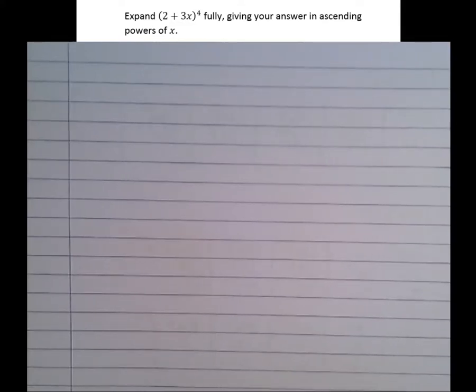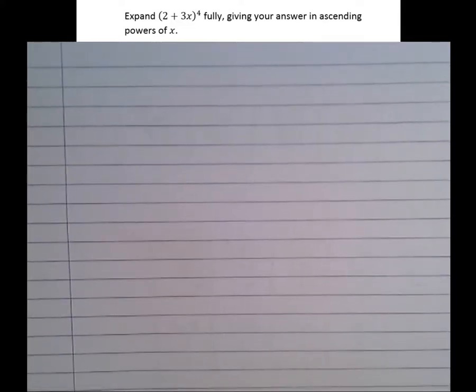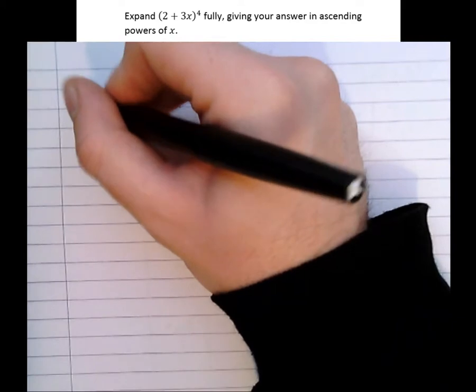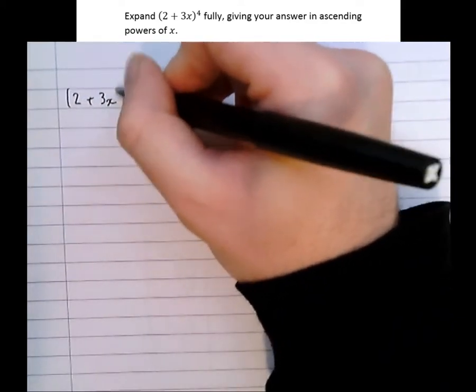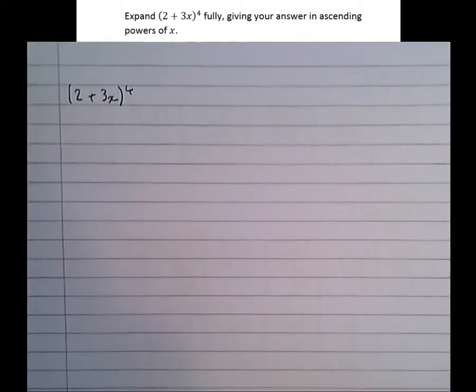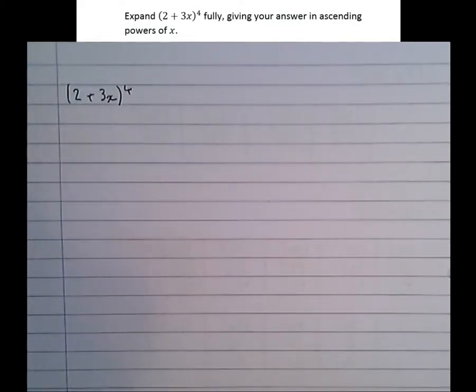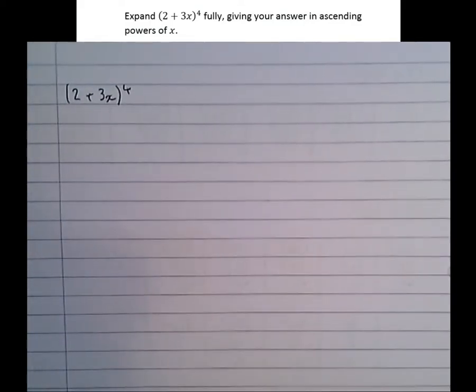We're going to have a look at a way of speeding up the binomial expansion, to make it a bit clearer and quicker. The question is: we've got (2 + 3x) to the power of 4, and it's asking us to expand that in ascending powers of x — starting with the smallest power of x and working up to the highest.